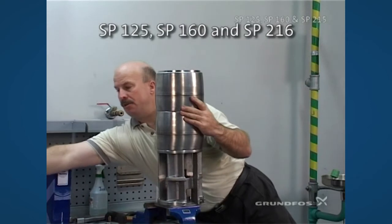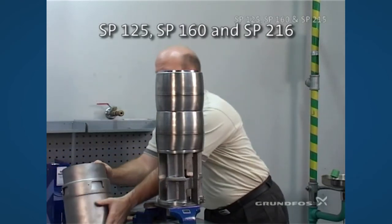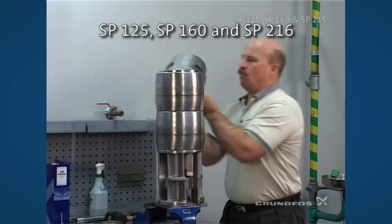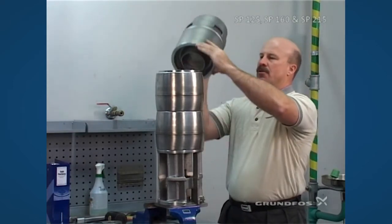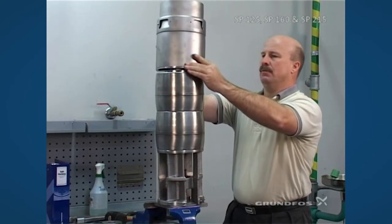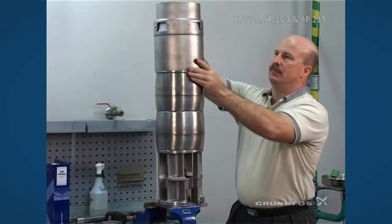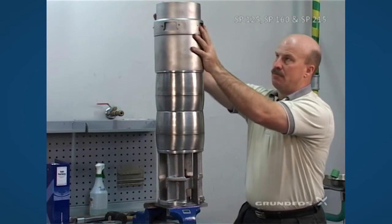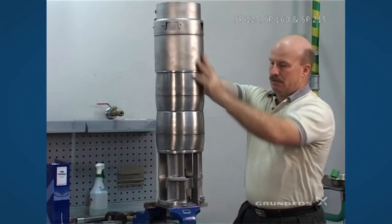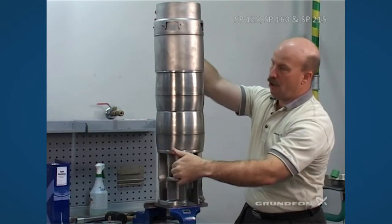Once in place we can add our discharge piece. Remember that this is multiple components so you'll want to hold onto the ring so that it doesn't come off. You'll line up the slots just like we did with the previous model with the holes that are provided.